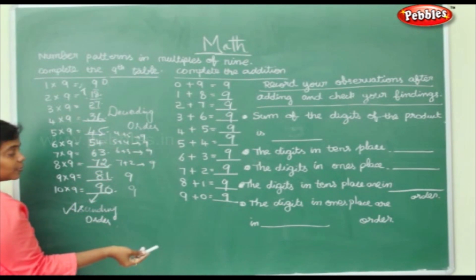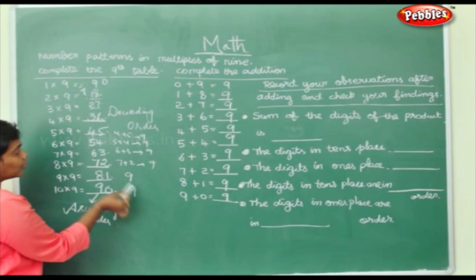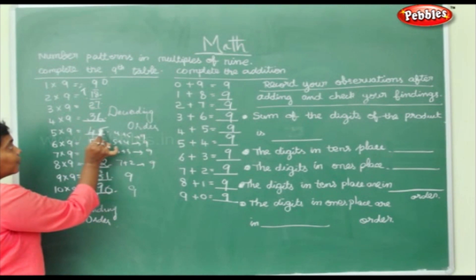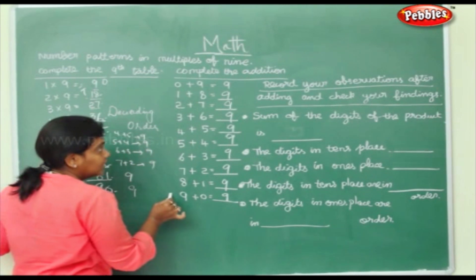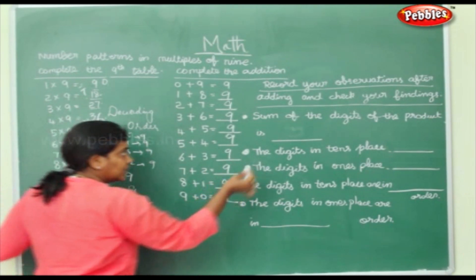These are called as products. If you add these products, this is 7 plus 2, 6 plus 3, 5 plus 4, 4 plus 5, which is being done here. The sum of the digits of the product are 9.